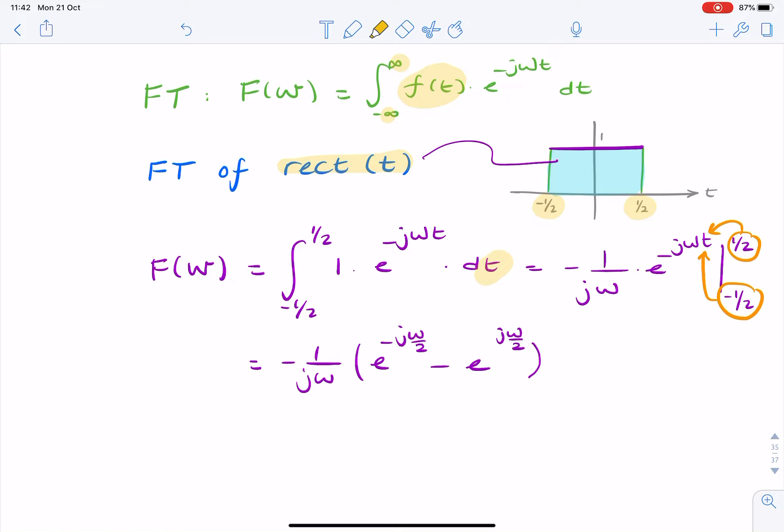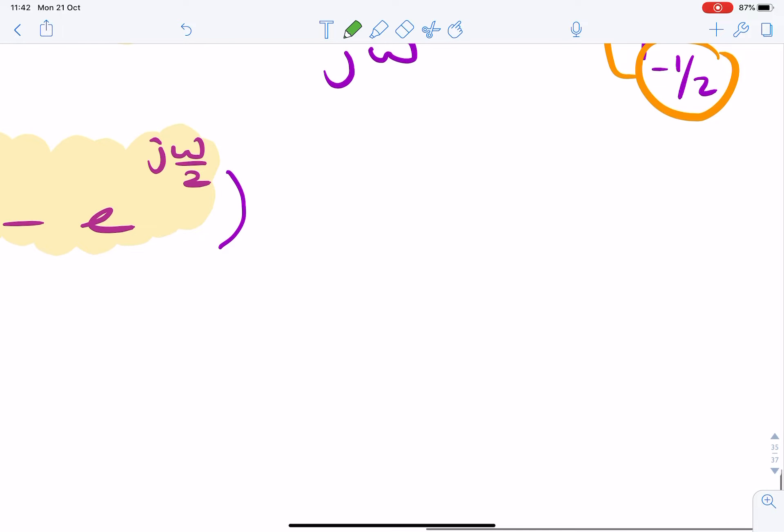And now we have this expression, which, if you look carefully, almost looks like a sine function. So you've got the j in the denominator. That minus sign will be helpful in a second.